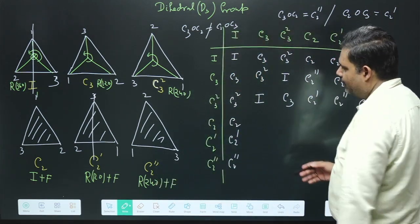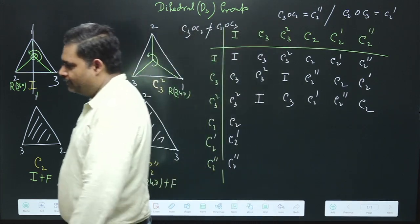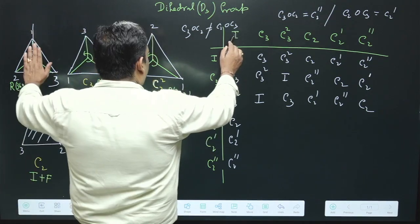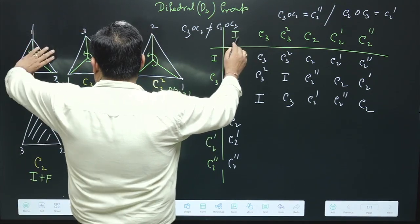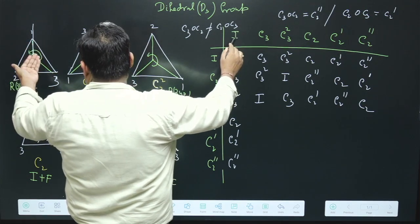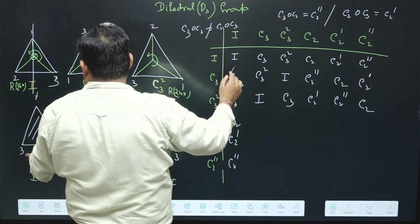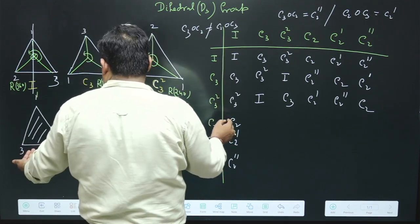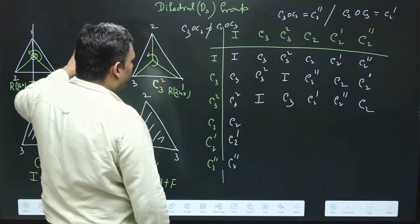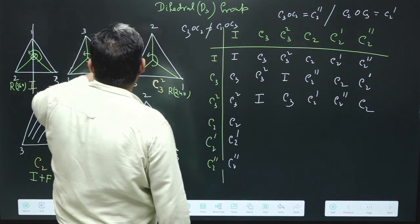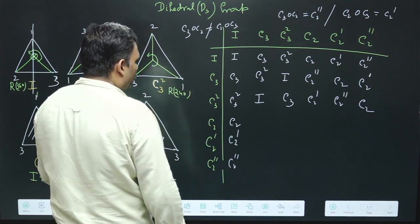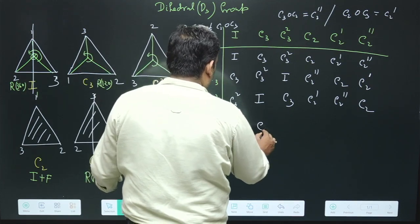Filling entries for C2 composed with C2: rotating 360 degrees (identity rotation) then flipping, applied twice, returns to identity. C2' composed with C2 involves rotating 360 degrees then flipping the C2 configuration, which gives C3. These reflect the group structure where applying a reflection twice returns to identity.